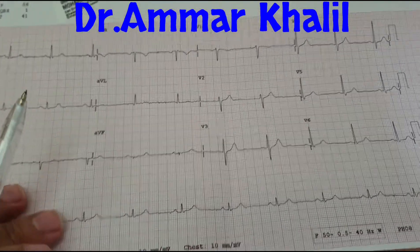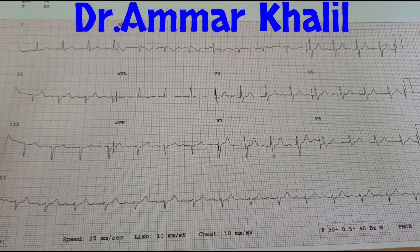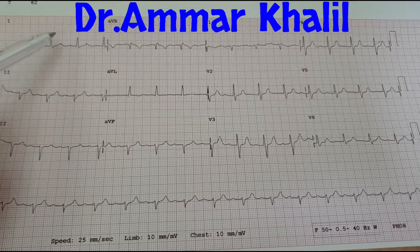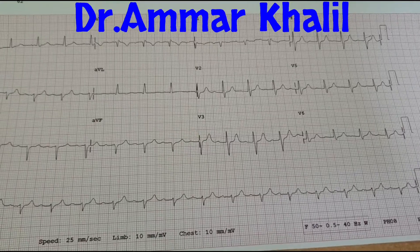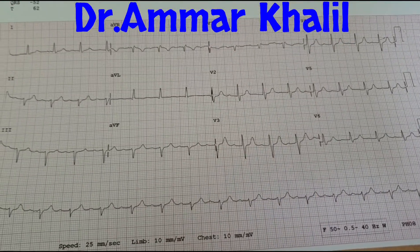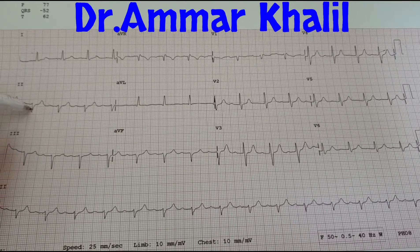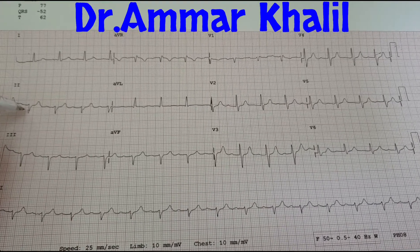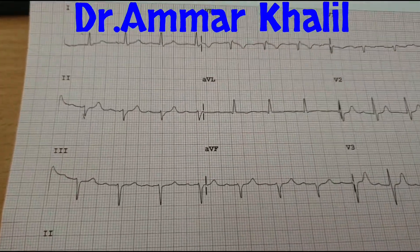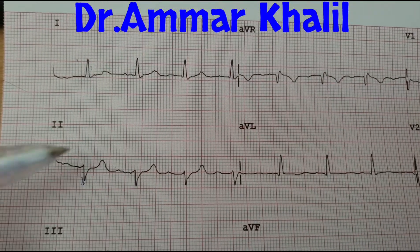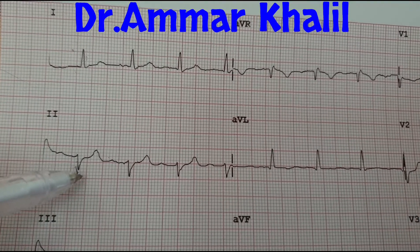For the second patient, looking at lead one and lead two — see the R wave in lead one and the R wave in lead two. Here it is positive and here it is negative. So this is called left axis deviation. As you can see, this is lead one and lead two clearly. The R wave here is positive, and in lead two it is negative — a downward deflection.